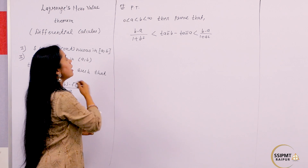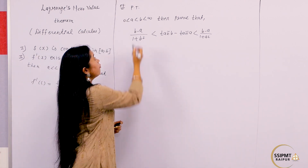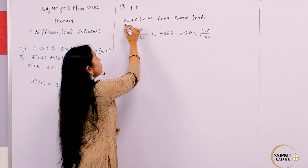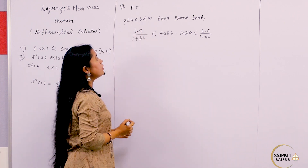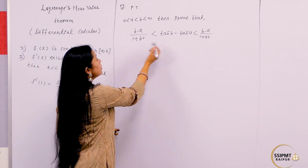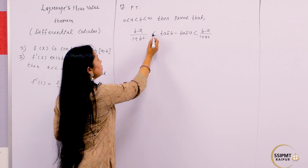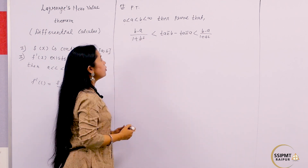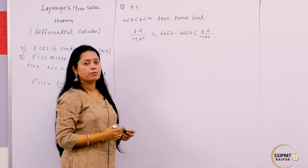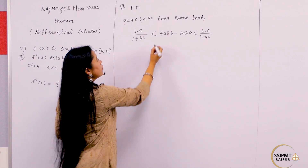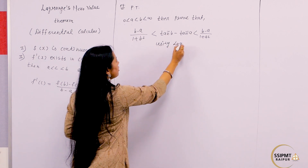I have written an example over here: if two values a and b are between 0 to infinity where b is greater than a, then we have to prove that tan⁻¹(b) minus tan⁻¹(a) is greater than (b minus a) upon (1 plus b square), but it is less than (b minus a) upon (1 plus a square), using Lagrange's Mean Value Theorem.